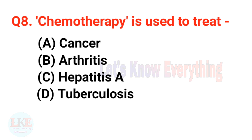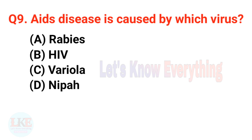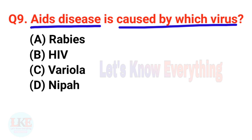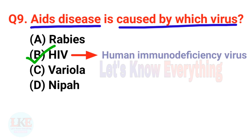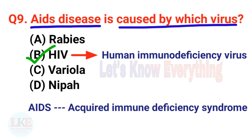Question number eight: chemotherapy is used to treat cancer. Question number nine: AIDS disease is caused by which virus? The right answer is option B, HIV — Human Immunodeficiency Virus. The full form of AIDS is Acquired Immune Deficiency Syndrome.